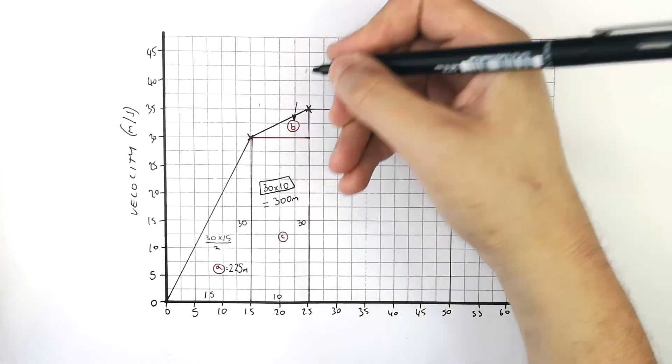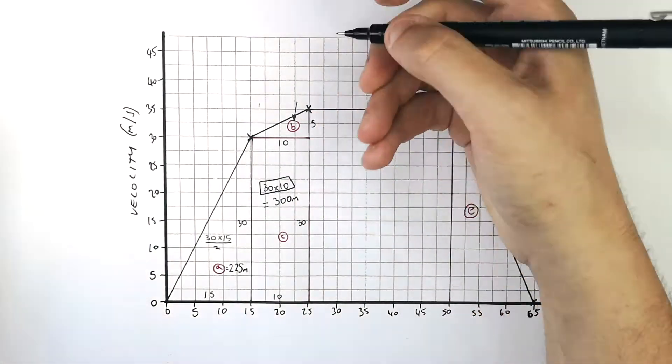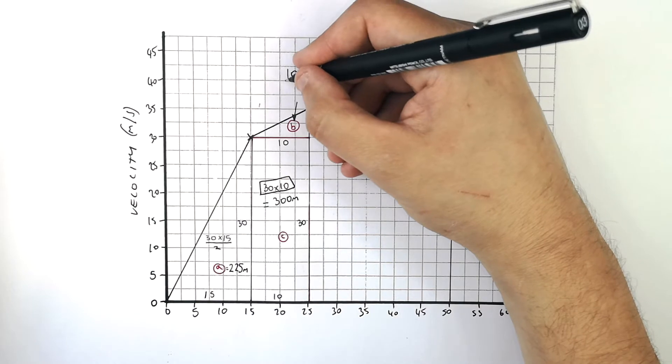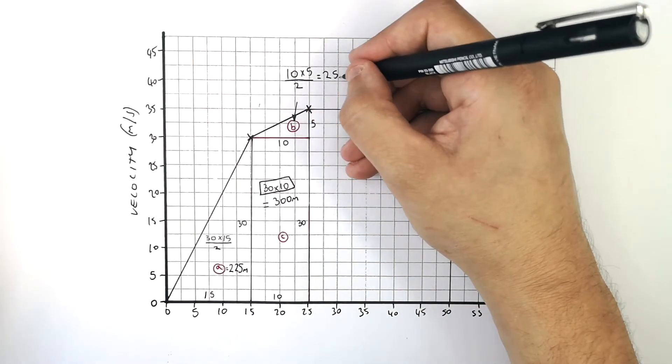So the triangle above that rectangle has a base of 10 as well but a height of 5 so it's going to be base times height divided by 2 so it's 10 times 5 divided by 2 which is a distance of 25 metres.